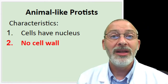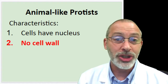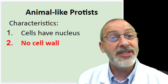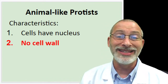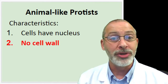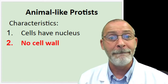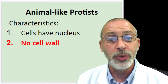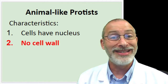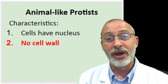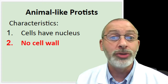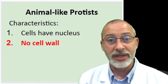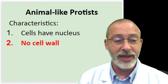Next characteristic: no cell wall. That should sound familiar - back in the first unit, when we learned to distinguish between plant cells and animal cells, this was one of the main characteristics we focused on. Animals do not have cell walls, nor do animal-like protists. When we examine these on Thursday during our lab, we'll try to take notice of this particular feature.